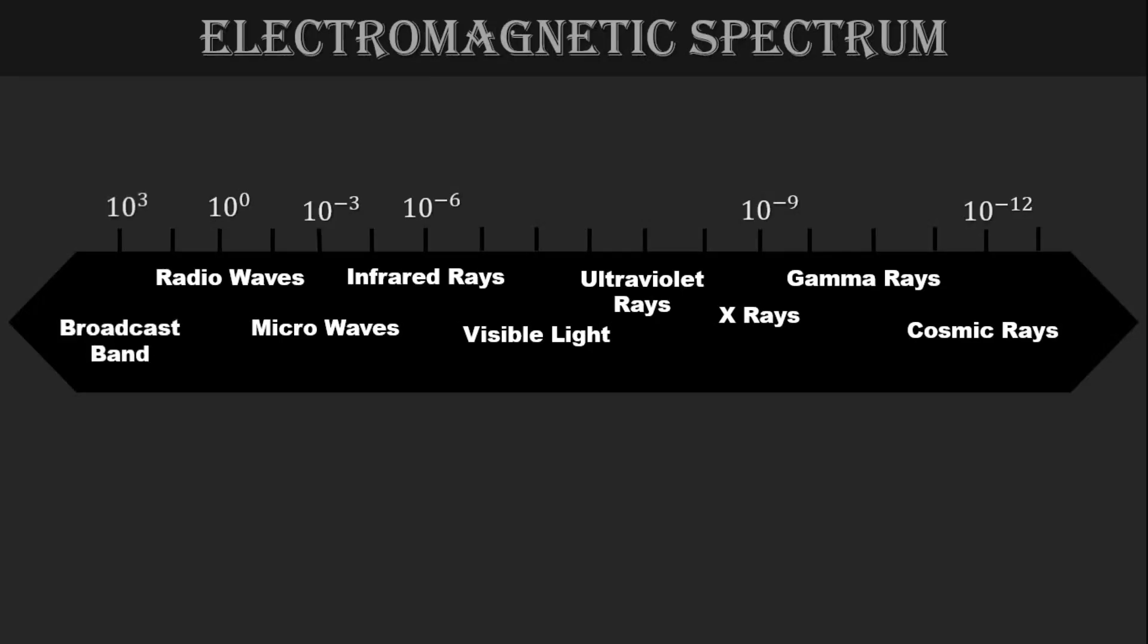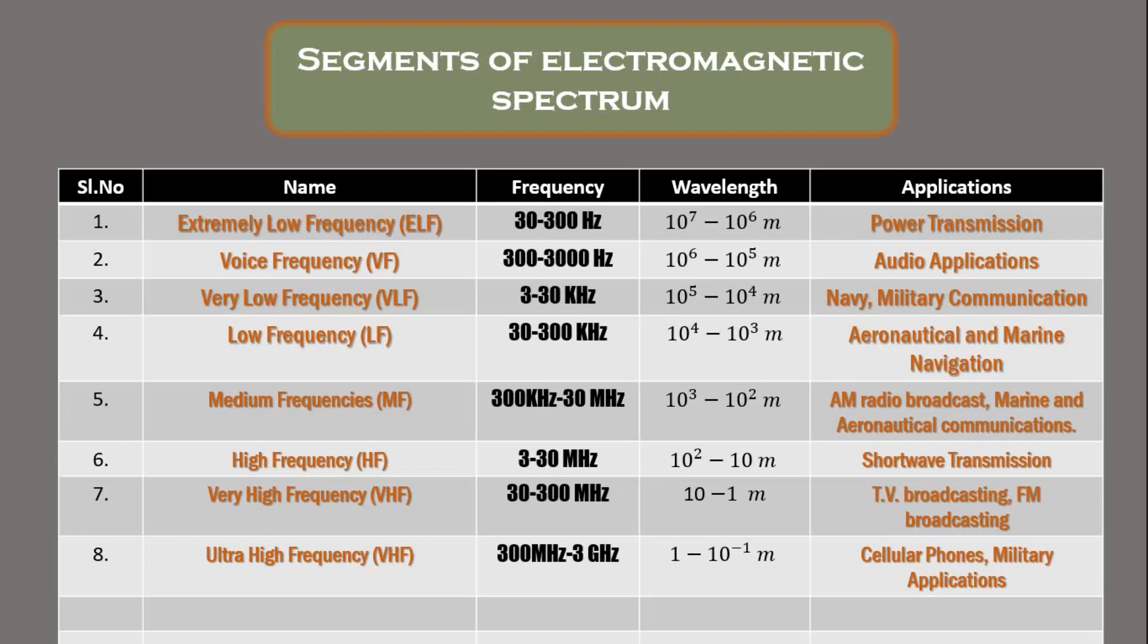Broadcast band has lowest frequency range and highest wavelength. Here are some of the broadcast bands listed below, like extremely low frequency used in power transmission. Very low frequency having wavelength 10 to the power 5 to 10 to the power 4 meter may be used in navy or military communication. High frequency used in short wave transmission and so on.